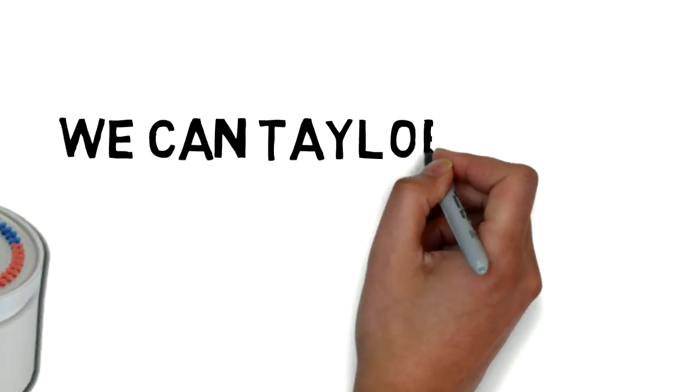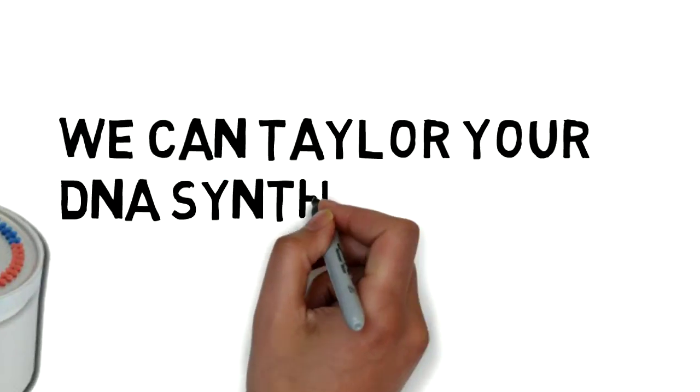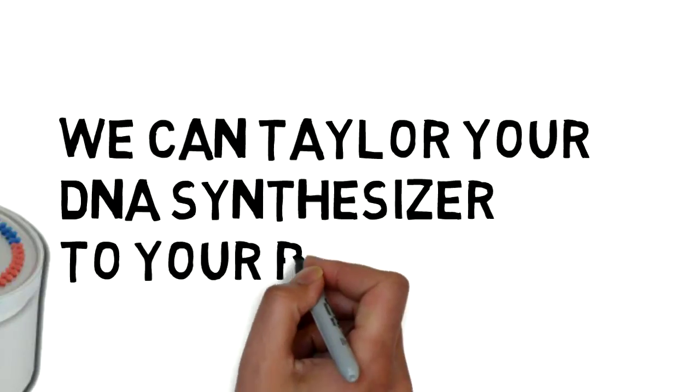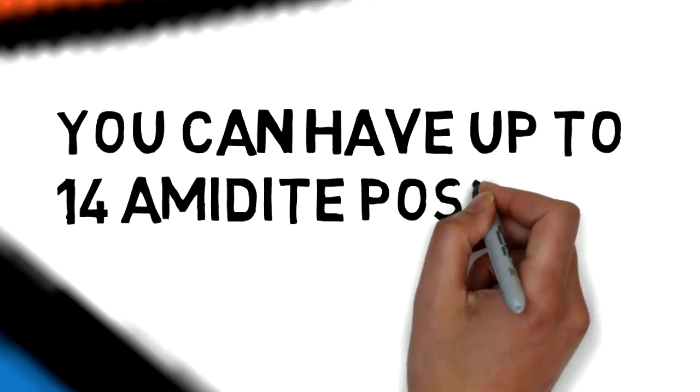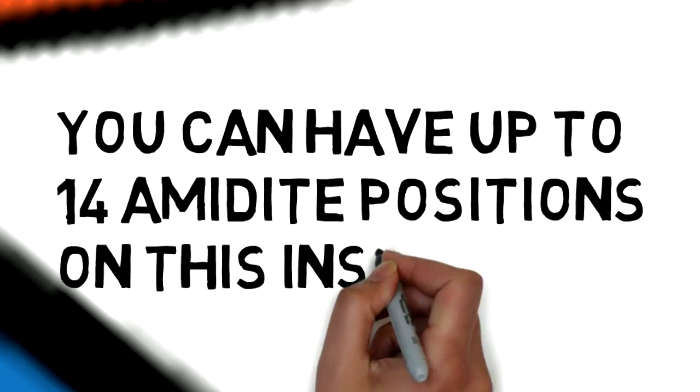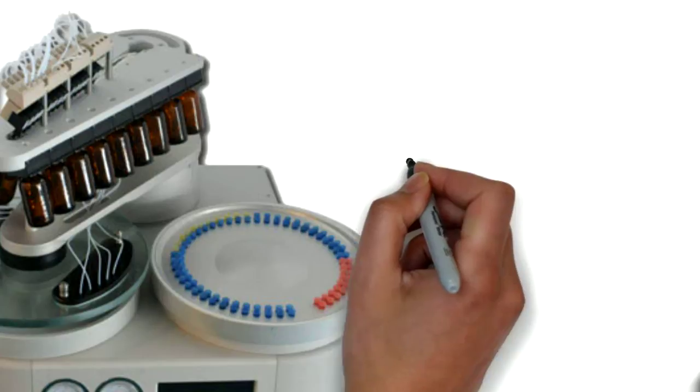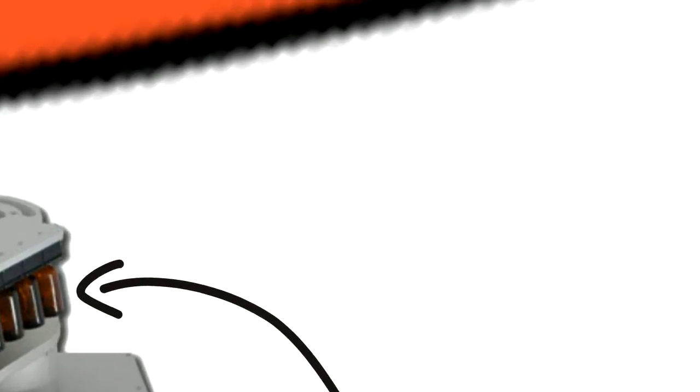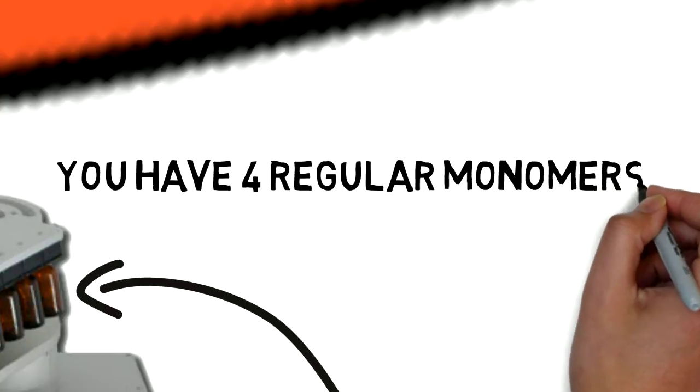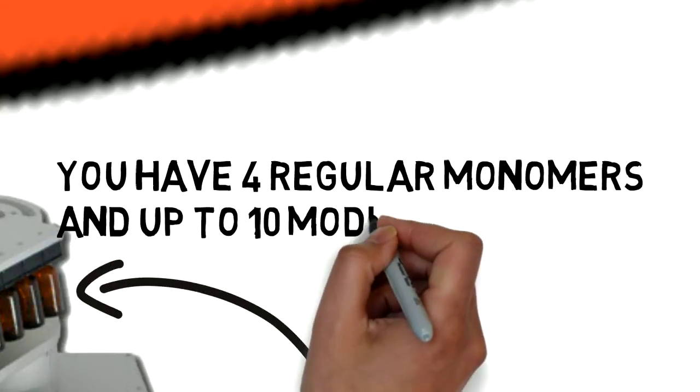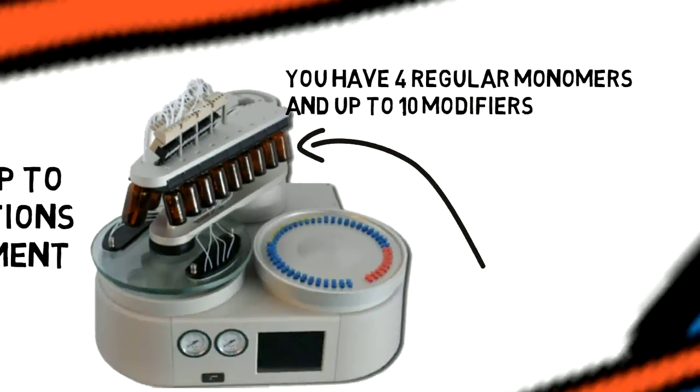We can tailor your DNA synthesizer exactly to your requirements. You can have up to 14 amidite positions on this instrument. We will have 4 regular monomers, as well as up to 10 modifiers. That should be enough for most people.